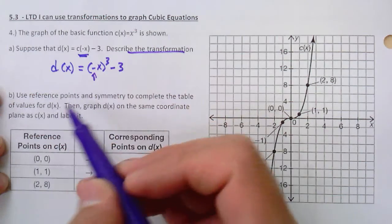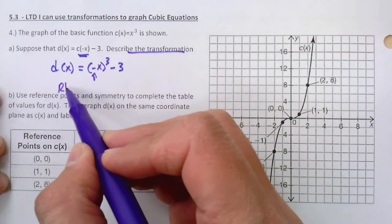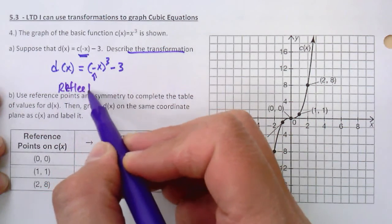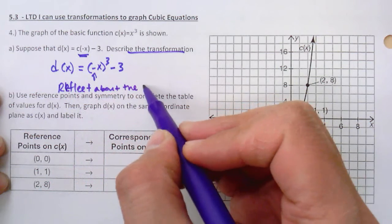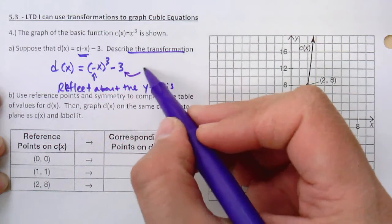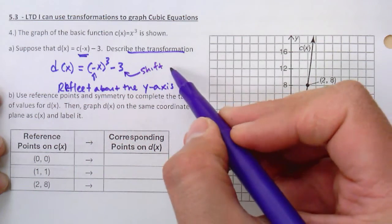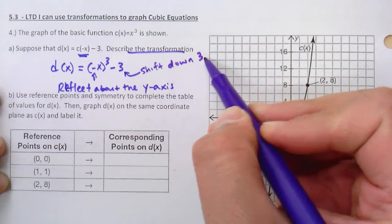So that negative here, what it's saying is we're going to reflect about the y-axis. And then this is just a shift, a move down 3.